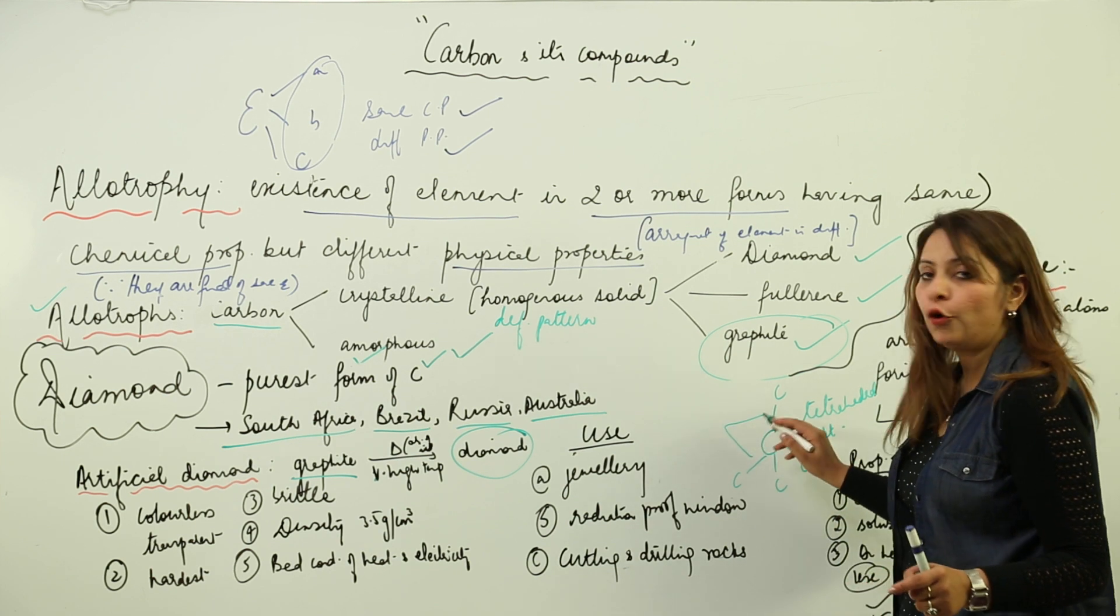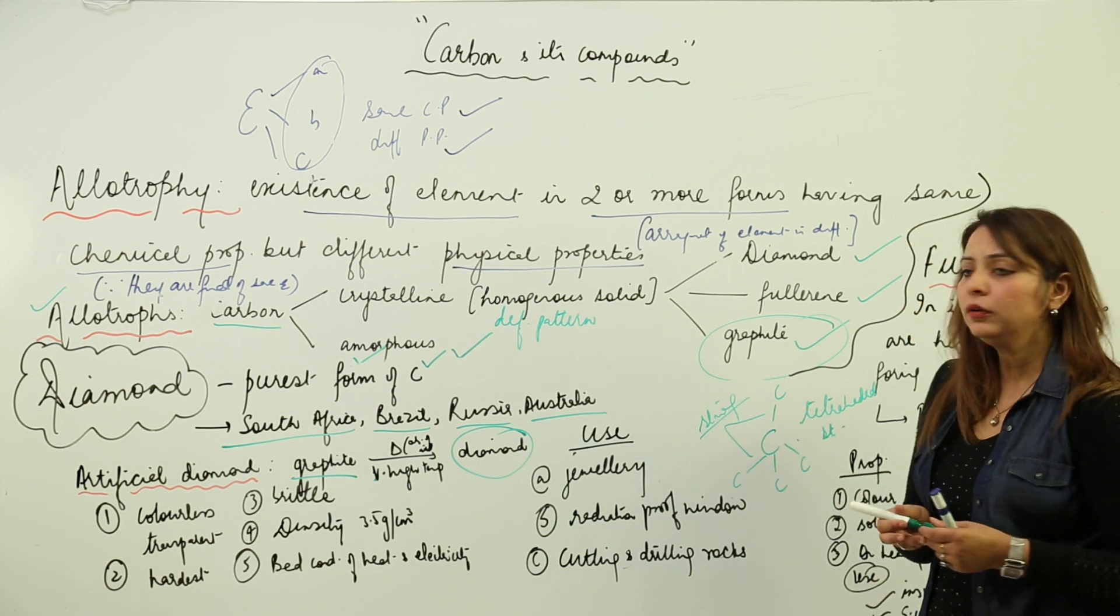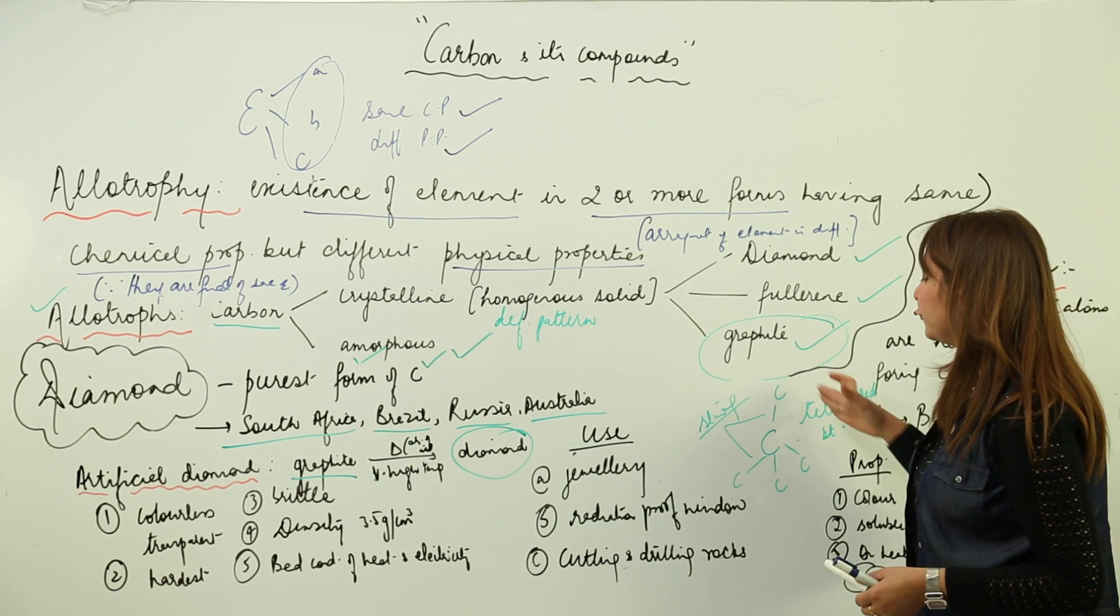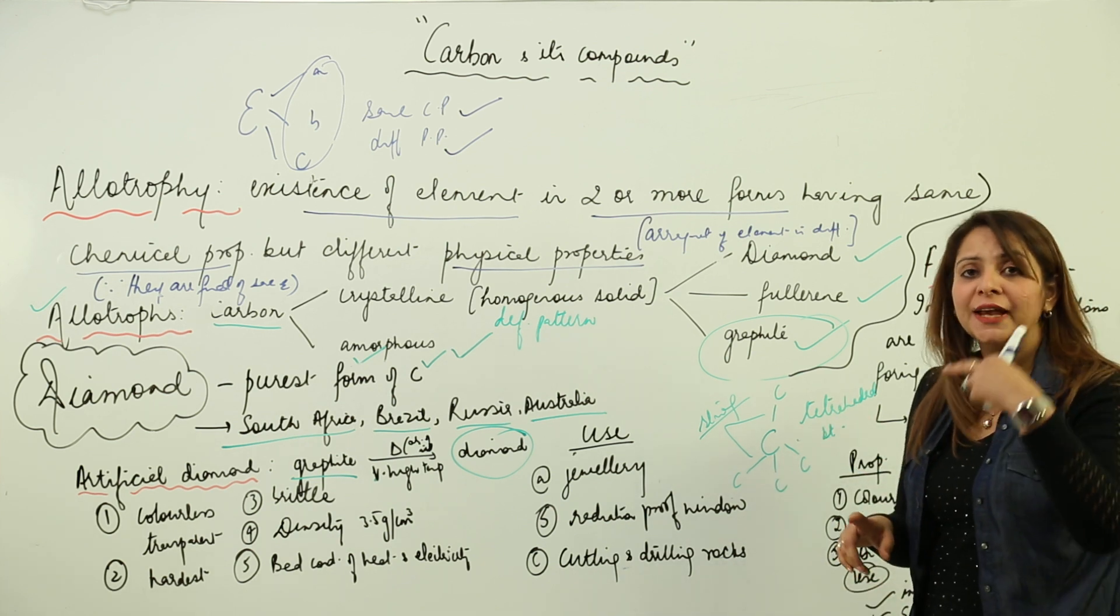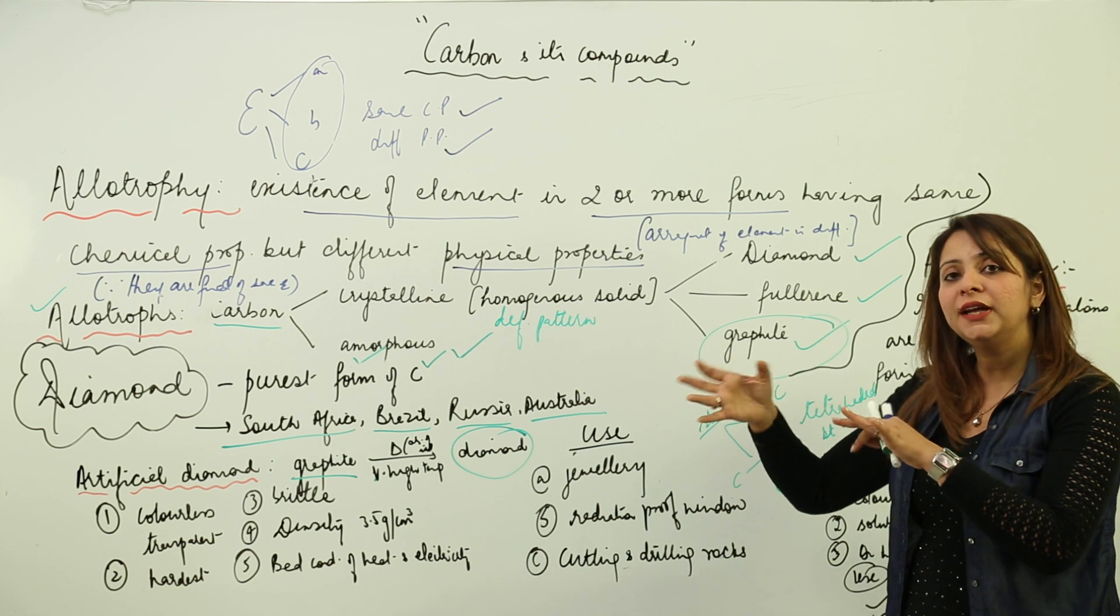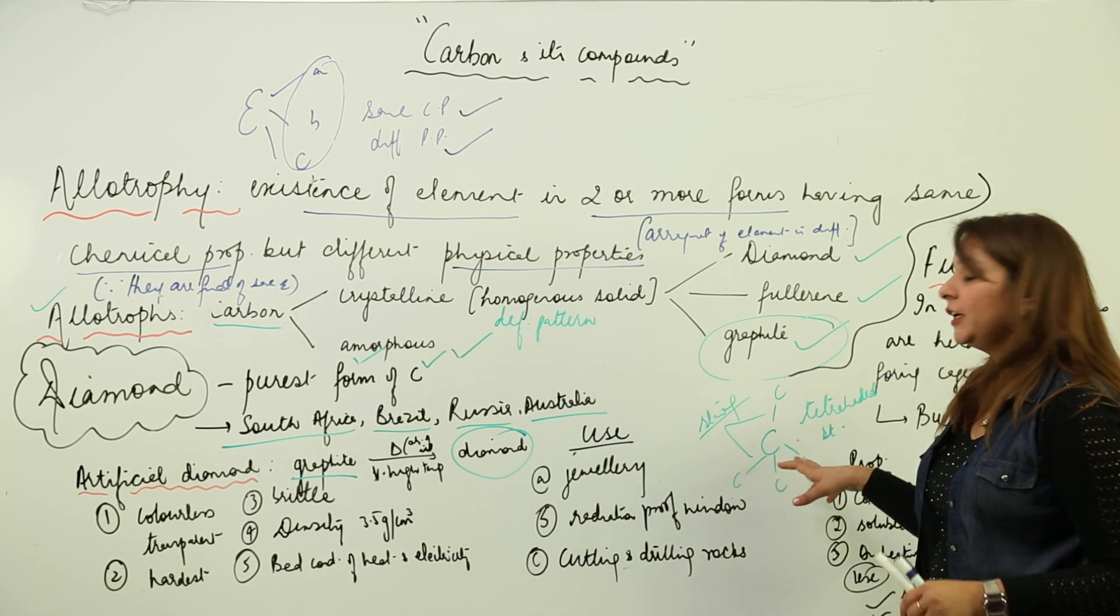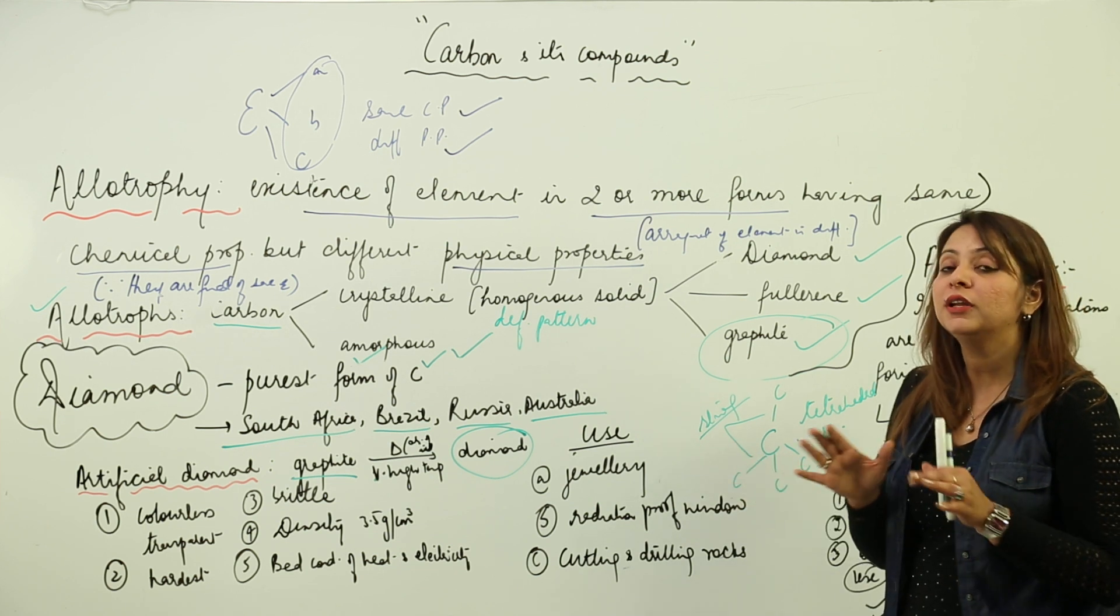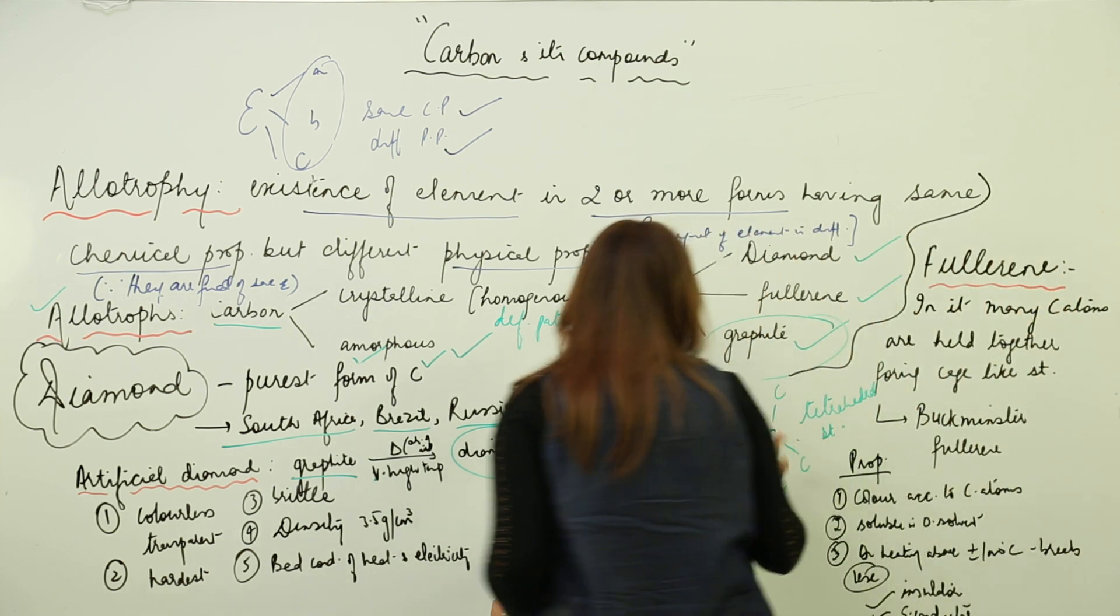Moreover, the bonds which are formed are very strong bonds. Each carbon atom is linked to four others forming a tetrahedral structure. In graphite it was hexagonal, here it is tetrahedral. There the bonds were weak with a tendency to slip, but here the bonds are very strong. Therefore diamond is the hardest substance known.